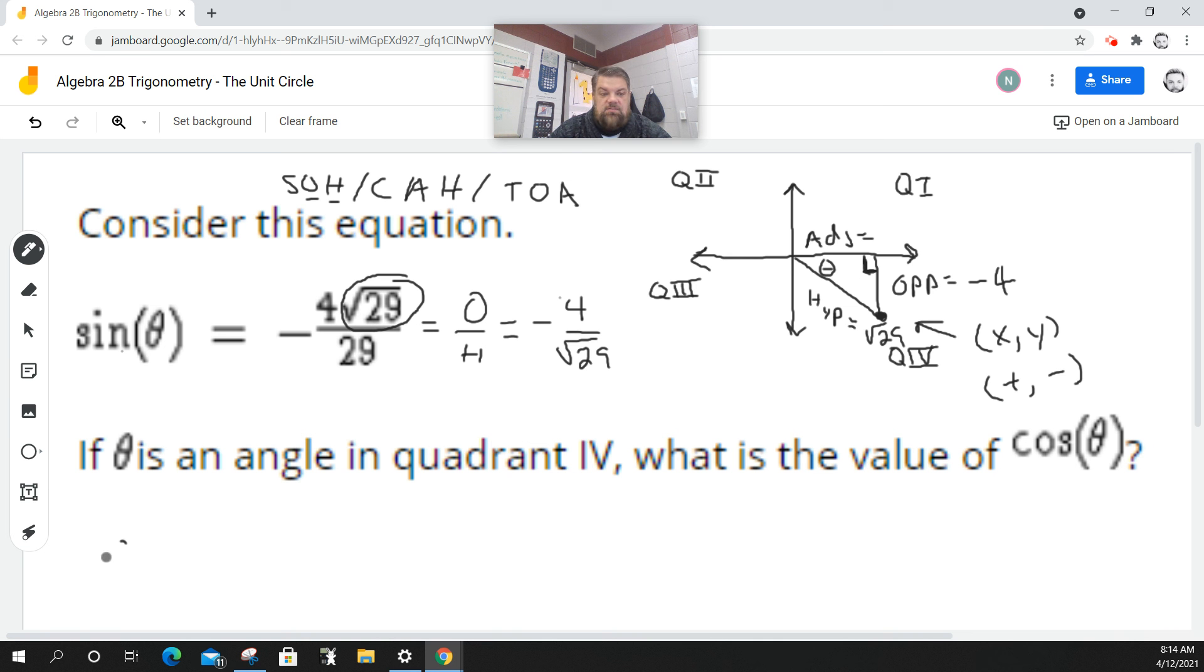All right. So now, cosine, cosine of theta, according to SOH CAH TOA, is the adjacent over the hypotenuse. Well, we know what the hypotenuse is, but we don't know what the adjacent is.